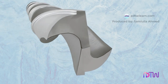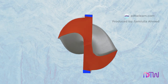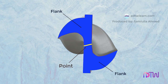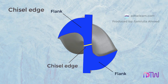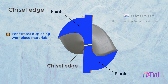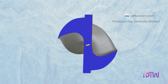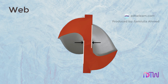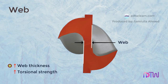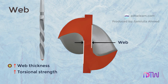Looking at the bottom portion of the drill body, we can see both flanks intersect at a point. This intersection of the flanks is called the chisel edge. The chisel edge does not cut — it penetrates by displacing workpiece material. The chisel edge consumes 60% to 70% of the thrust required. Web: the thickness measured across the base of the flutes is called the web. More web thickness results in higher torsional strength. The size of the web increases along the length of the drill to provide strength and rigidity.